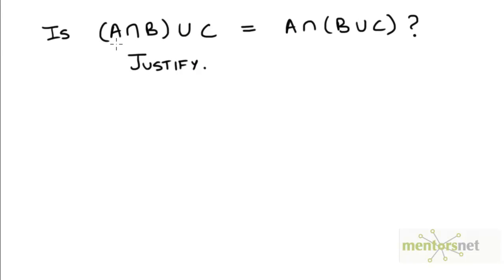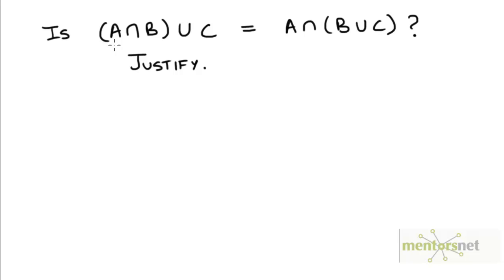Is it generally true that A intersection (B union C) is equal to (A intersection B) union C? Regardless of whether we think this is true or false, can we justify our belief? We have seen earlier that when you have a series of operations of different kinds — intersection followed by union, or union followed by intersection — we cannot just parenthesize the expression arbitrarily. The parentheses must be supplied because the result depends on how we parenthesize the expression.